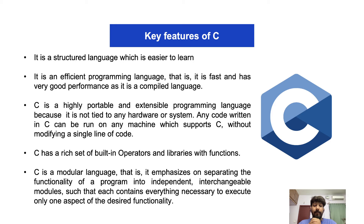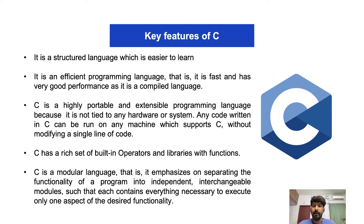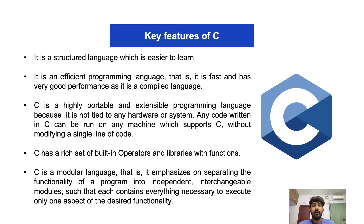C is highly portable and extensible because it is not tied to any hardware or system. Any code written in C can run on any machine with a C compiler, without modifying a single line of code. Unlike modern languages that require tweaking for different systems due to dependencies, C just needs the compiler to be available. It also has a set of built-in operators and libraries with many useful functions.